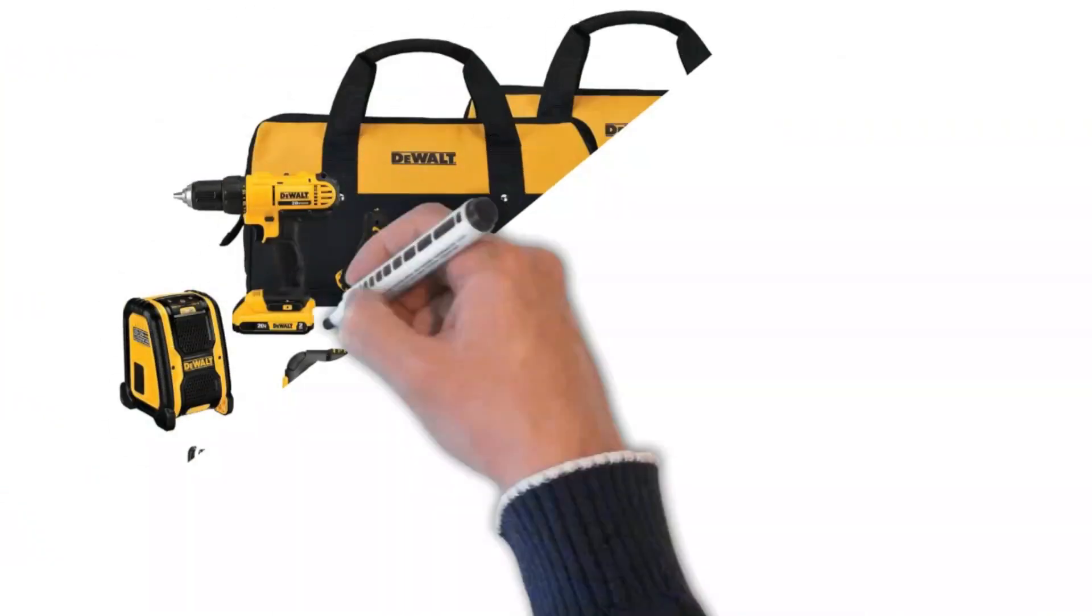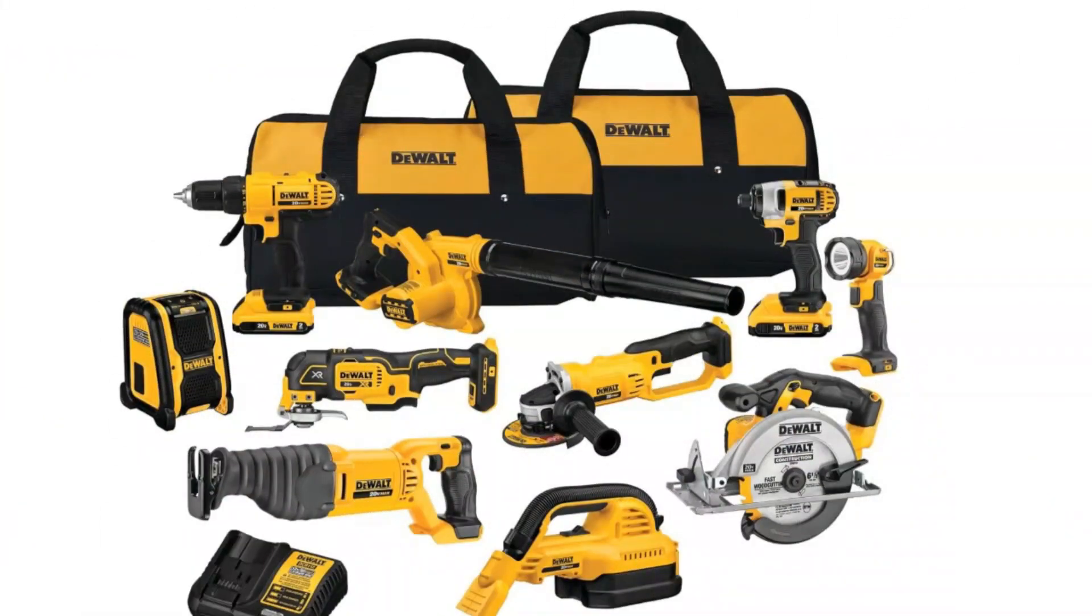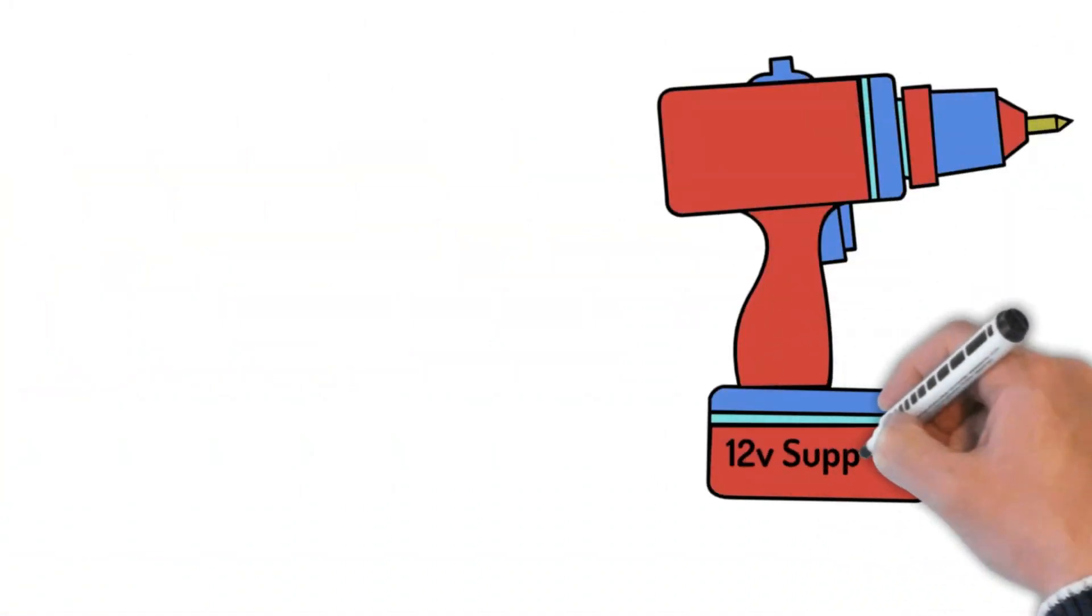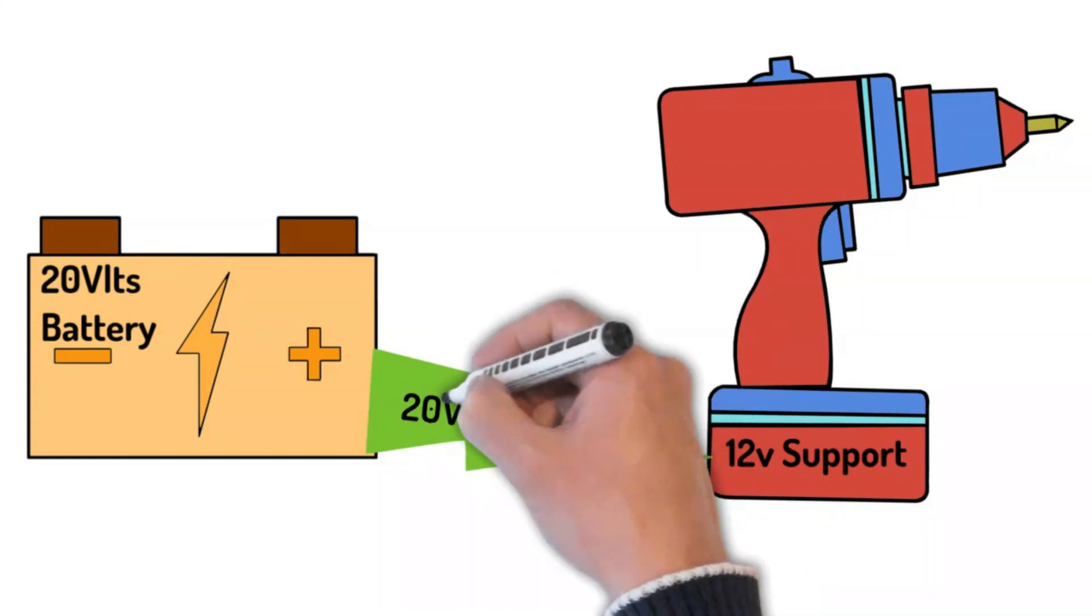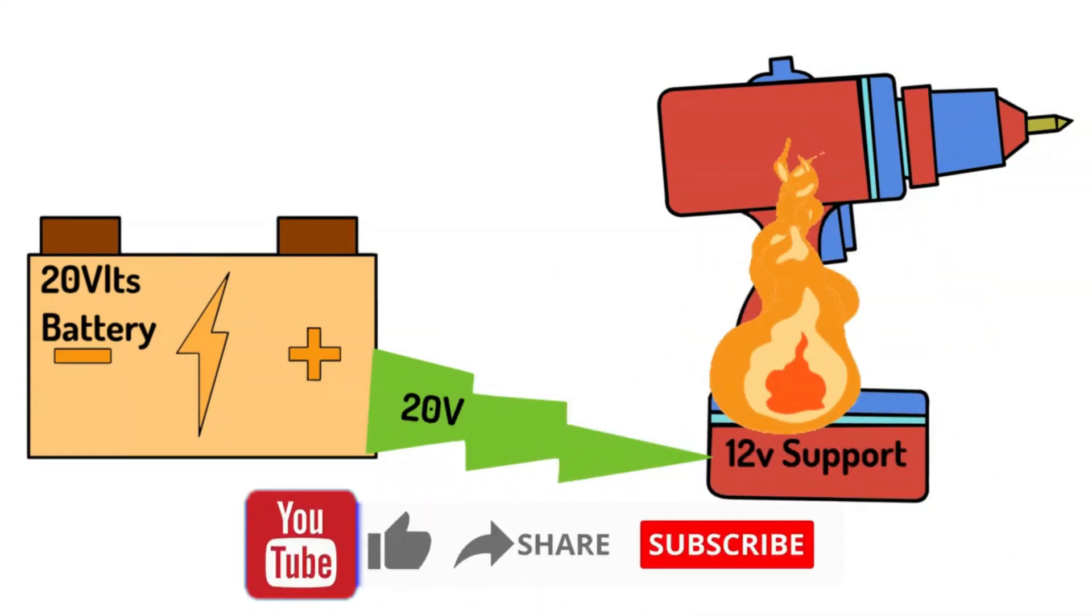DeWalt tools, like many others, are designed to work with specific voltage batteries. In this case, 12 volts. Using a higher voltage battery, like this 20 volts one, can potentially damage your tool and even pose safety risks.